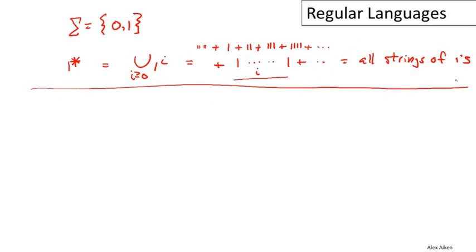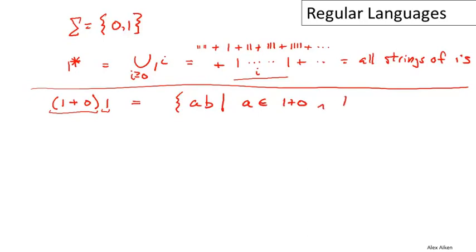Now let's think about the language (one plus zero) concatenated with one. Concatenation works as a cross product: we take every string in the first expression and combine it with every string in the second. So this equals all strings AB where A is drawn from (one plus zero) and B is drawn from one. There are two choices for A — it could be one or zero — and B must be one. So this equals the set containing the strings one-one and zero-one.